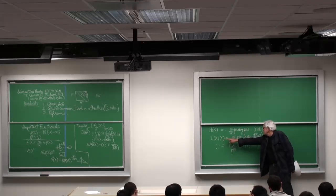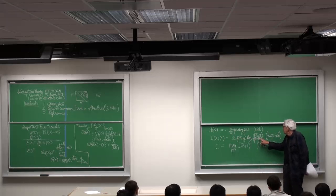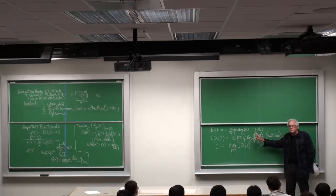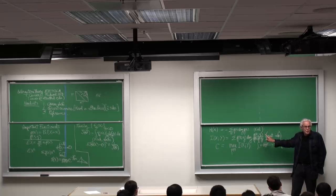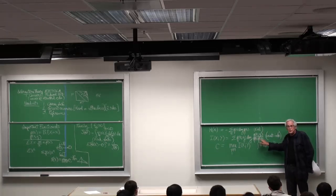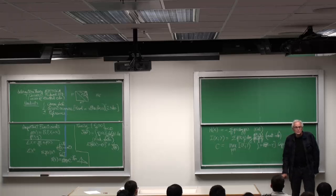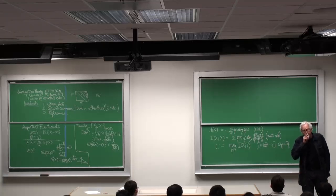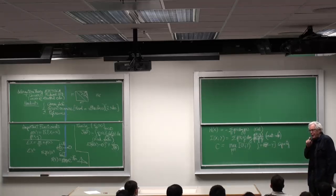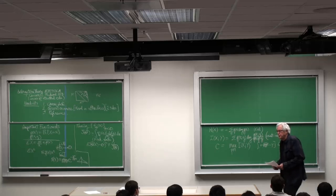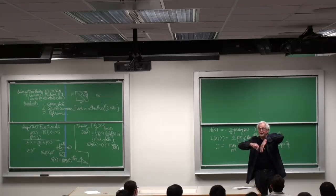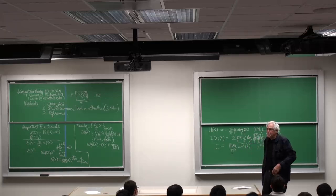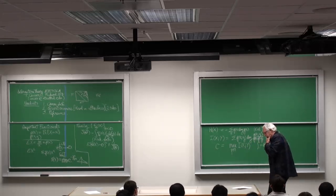People will recognize the mutual information here as the expected value of the likelihood ratio of joint distribution p of x, y with respect to the product. Well, the likelihood ratio is what you use to do a hypothesis test whether the likelihood is above a certain level or not.